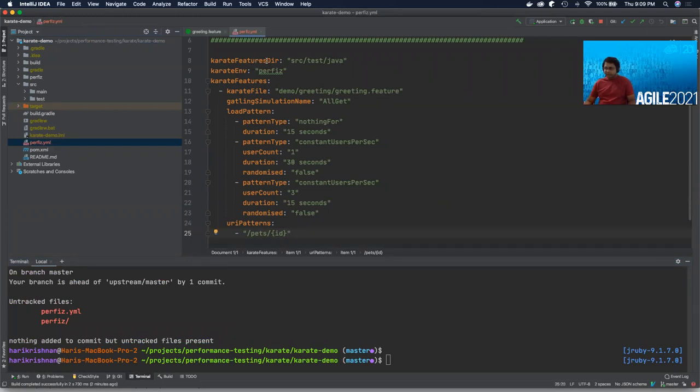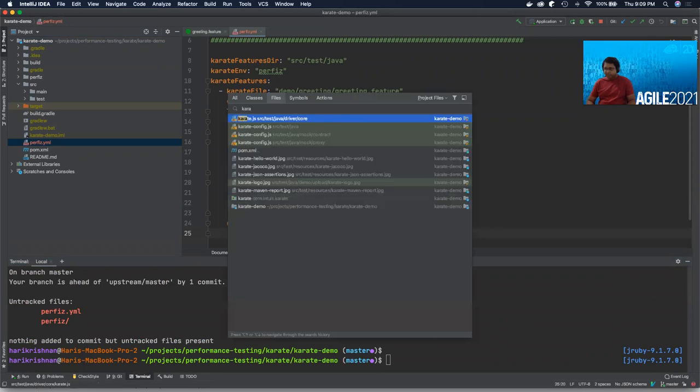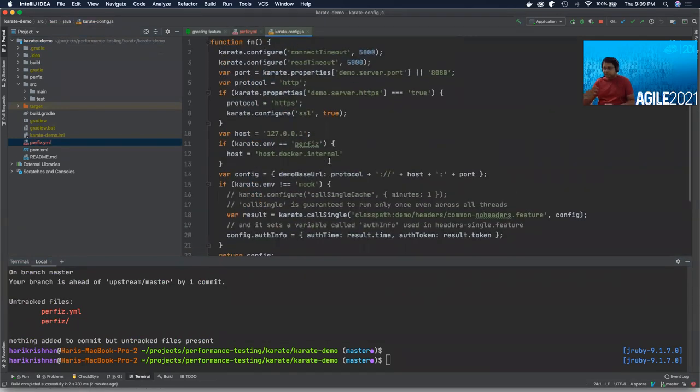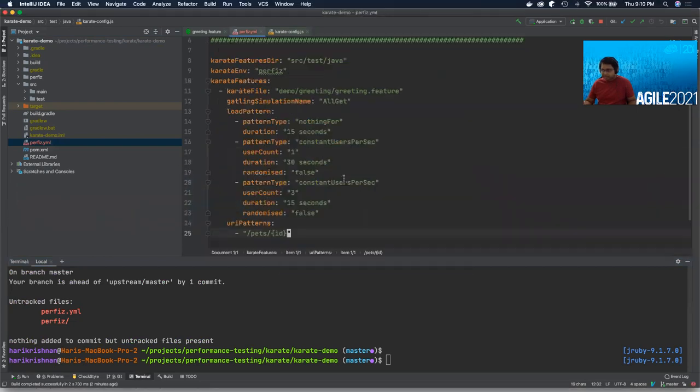So I open up my perfis.yaml. Now perfis has dropped in a template. Let me walk you through this document from the top. So at the top, I have the features directory and then the Karate feature file. Like I said, I would like to leverage the greeting.feature file. So these path parameters are helping perfis locate where the feature file is and create a simulation out of it. The second element here is called Karate env, which says perfis. Now, why is this required? This is because Karate config has a minor change in it. Because perfis is going to be running inside Docker, it needs to access our Spring Boot application, which is running on our local host. So for that purpose, I've created an environment and only set the host host.docker.internal.